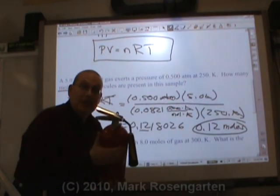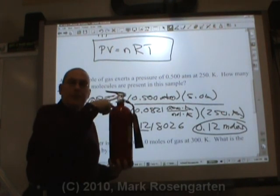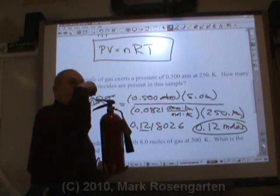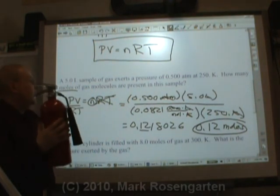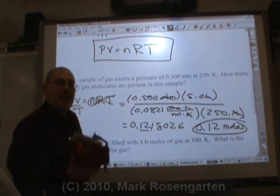Five liter container. The gas is at 250 kelvin. You've got 0.5 atmospheres of pressure. Inside this container, you've got 0.12 moles of gas.